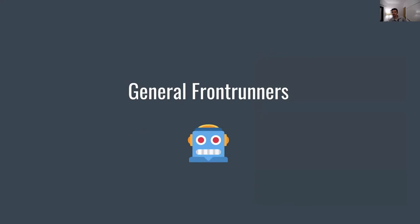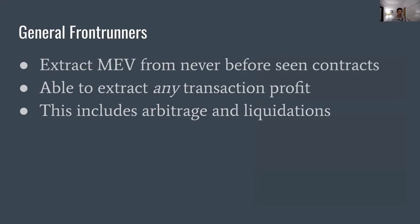While this type of MEV is quite well understood, there are other types of actors in the blockchain who are watching the mempool — this is what we call the general front-runners. Unlike arbitrageurs who look at specific DEXs, or maybe a combination of DEXs, general front-runners can look at any transactions in the mempool, look at contracts that maybe they haven't even interacted with before, or haven't studied in depth, and look into transactions that perhaps have secrets that are only known to the original issuer, and they can still extract MEV from these transactions.